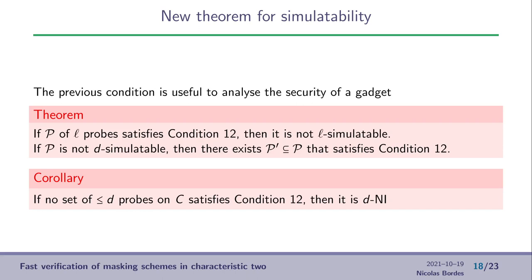As before, we can define a theorem and a corollary that state that if we have a set of probes of L probes that satisfy the condition, then it is not L simulatable, and if the set of probes is not d-simulatable, then there exists a smaller set, included in the first one, that satisfies the condition. And as a corollary, if no set of L probes on C satisfies the condition, then it is d-NI.